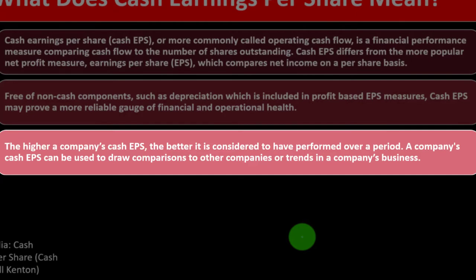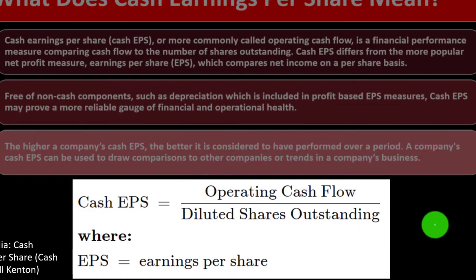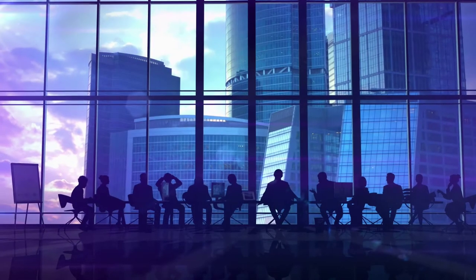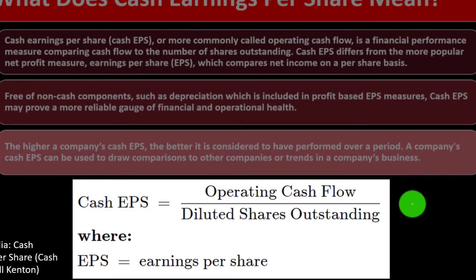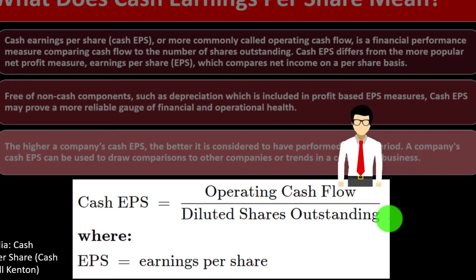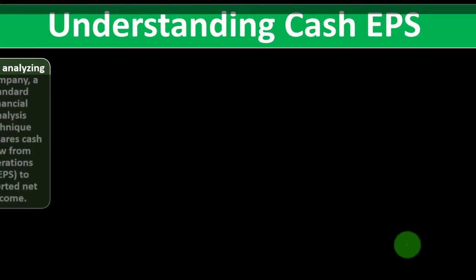The higher a company's Cash Earnings Per Share, the better it is considered to have performed over a period. A company's Cash EPS can be used to draw comparisons to other companies or to track trends in a company's business, helping gauge whether the stock price looks favorable by comparison. The formula takes operating cash flow — essentially net income adjusted for cash flow, with a major modification being the removal of depreciation — and divides it by diluted shares outstanding, breaking performance into standardized per-share units.